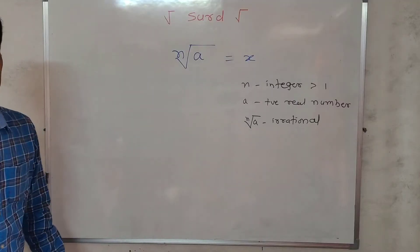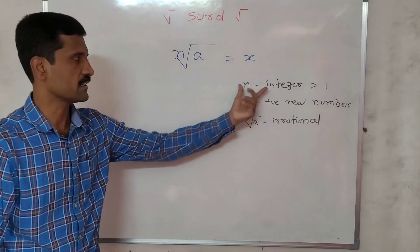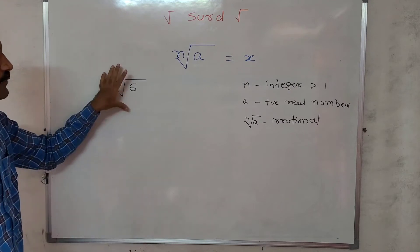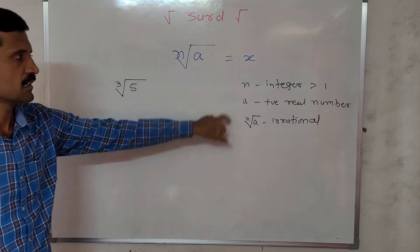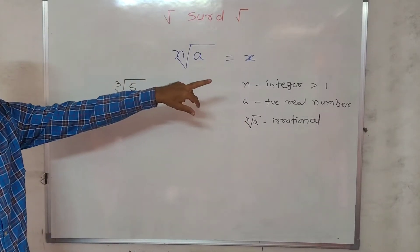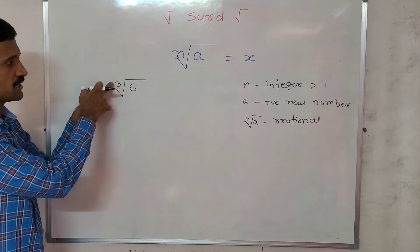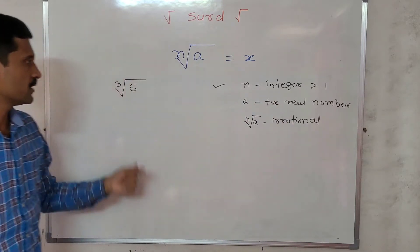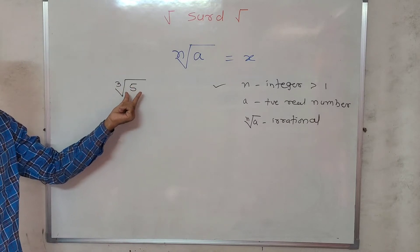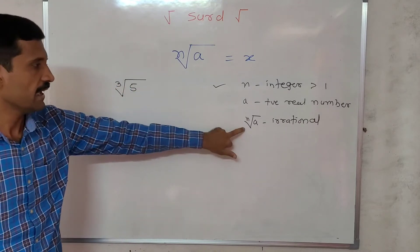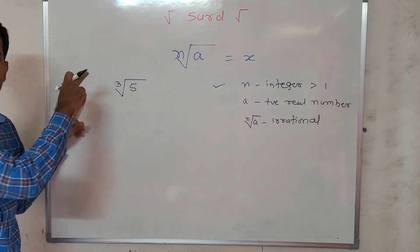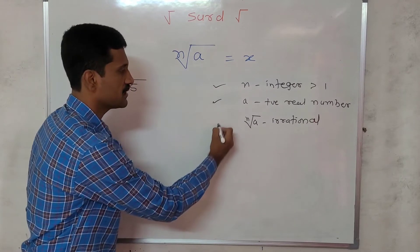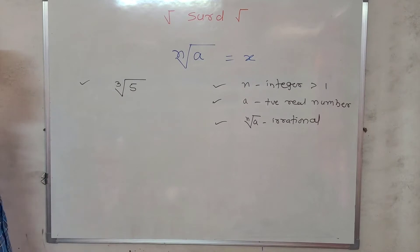Now let us have one example. Suppose we have the number cube root of 5. We have to decide whether it is a CERT or not. The order n is 3, which is an integer greater than 1 — first condition satisfied. The radicand 5 is a positive real number — second condition satisfied. And cube root of 5 is an irrational number — third condition satisfied. So all three conditions are satisfied, therefore cube root of 5 is a CERT.